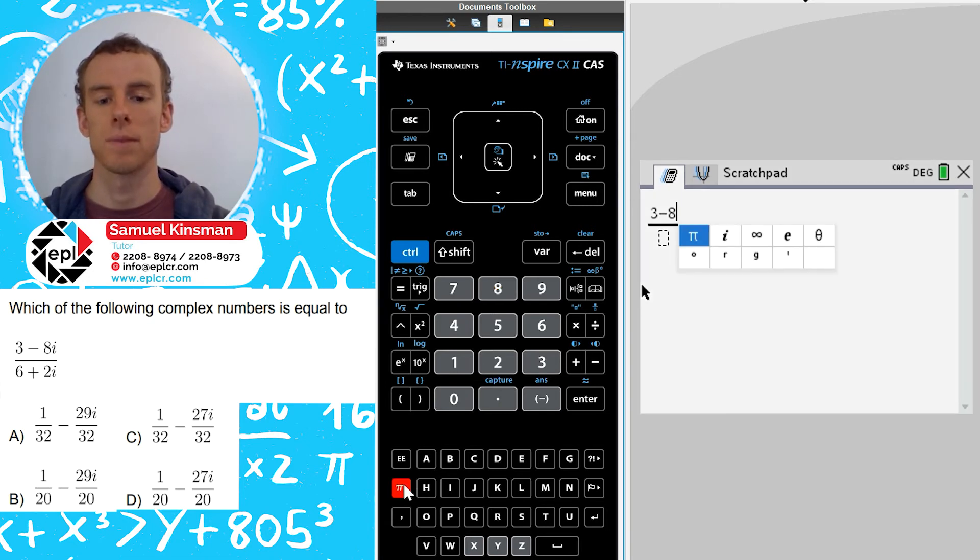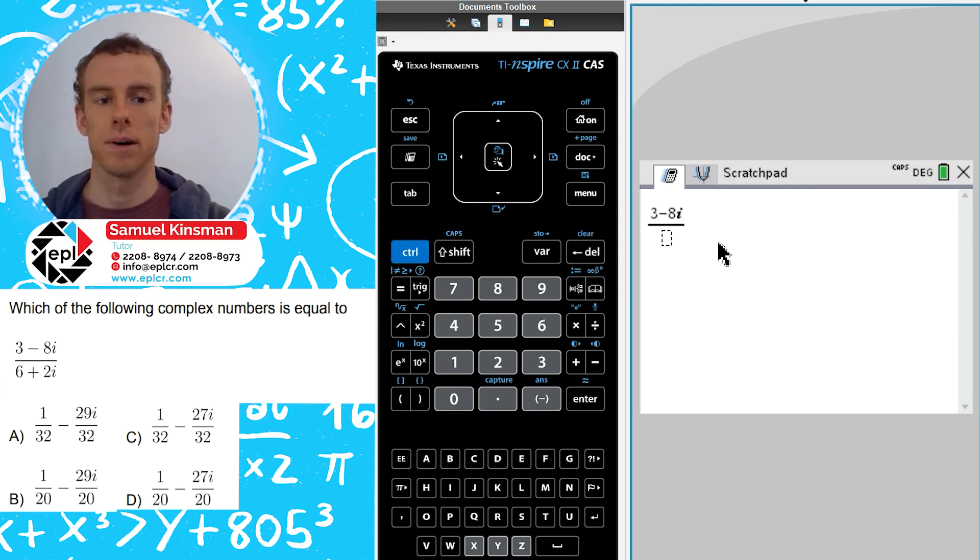Now the i, to type the i, you just press the pi button and you choose i. And on the bottom, we've got 6 plus 2i.